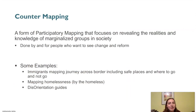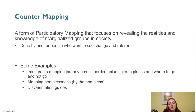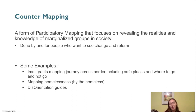Counter mapping is basically a subsection of participatory mapping where the community or group takes formal mapping into their own hands and uses it to bolster their message. It's typically politically charged, used by a group that is being marginalized or overlooked to display inequality. It's usually used against government or anything political.